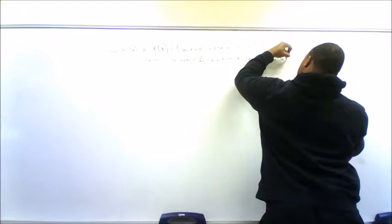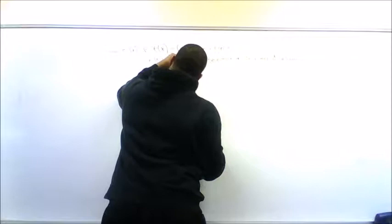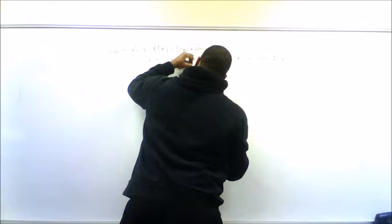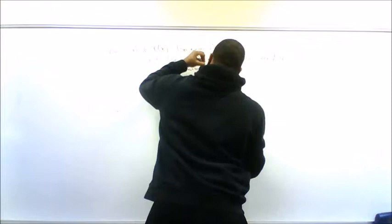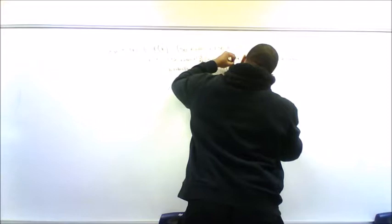Alright, so I'll bring this all down. The derivative of secant x is secant x tan x. And the derivative of negative tan x is negative secant squared x. Plus, keep a plus in the middle. Bring this all down. Derivative of secant x once again is secant x tan x.